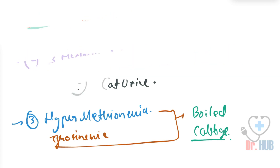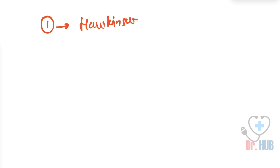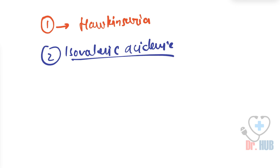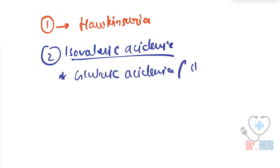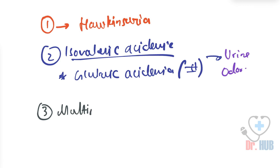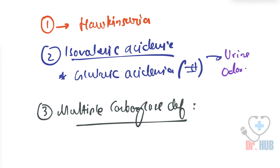Now for some bonus questions which you can answer in the comments. First: what is the urine odor in Hawkins urea? Second: what is the urine odor in isovaleric acidemia as well as glutaric acidemia type 2? Third: what is the urine odor in multiple carboxylase deficiency? You can answer all these questions in the comments.